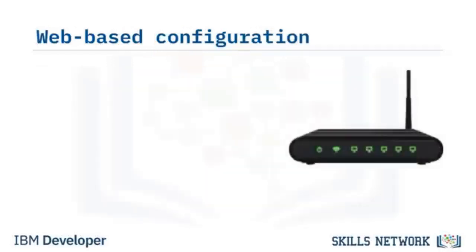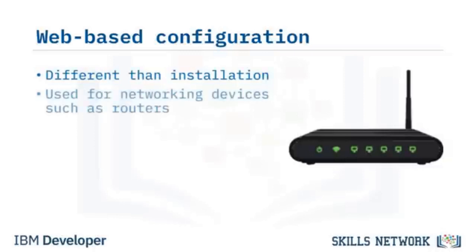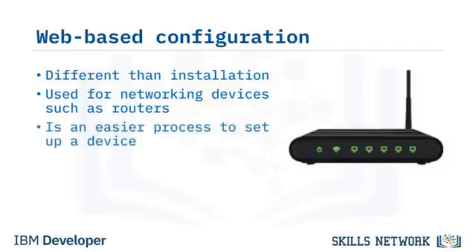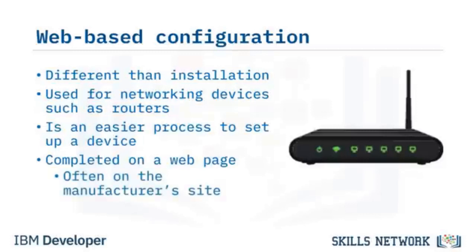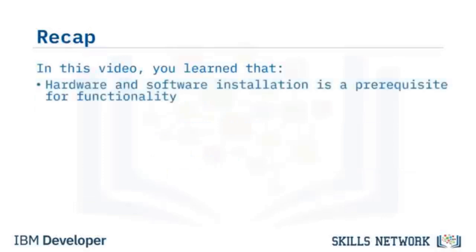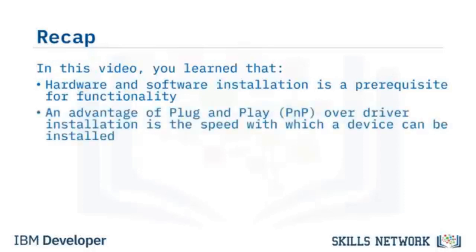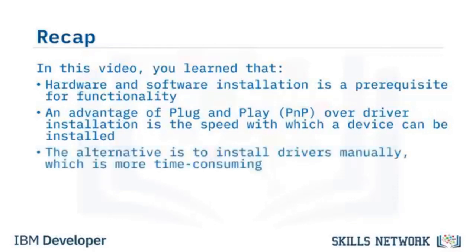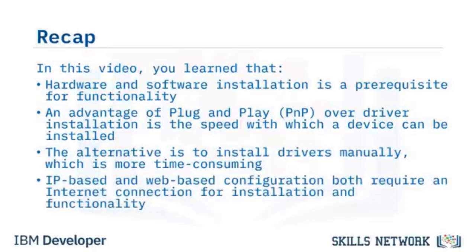Web-based configuration is used for networking devices such as routers, making the setup process easier. All your work is done on a web page, generally found on the manufacturer's website. In this video, you learned that hardware and software installation is a prerequisite for functionality. One advantage of plug-and-play over driver installation is the speed with which a device can be installed, whereas manual driver installation is more time-consuming. IP-based and web-based configuration both require an Internet connection for installation and functionality.